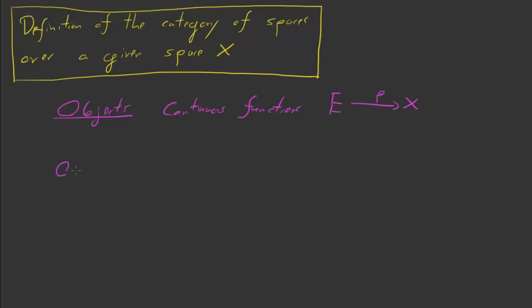Okay, and the arrows, the arrows are functions which make diagrams like the following one commute. So an arrow between, say, p and p prime...